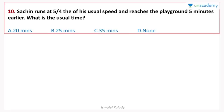Sachin runs at 5/4 of his usual speed and reaches the playground 5 minutes earlier. What is his usual time? Sachin's new speed is 5/4 of his usual speed. So usual speed is 4 units, new speed is 5 units. Since distance is constant, the ratio of speeds is inverse to the ratio of times.